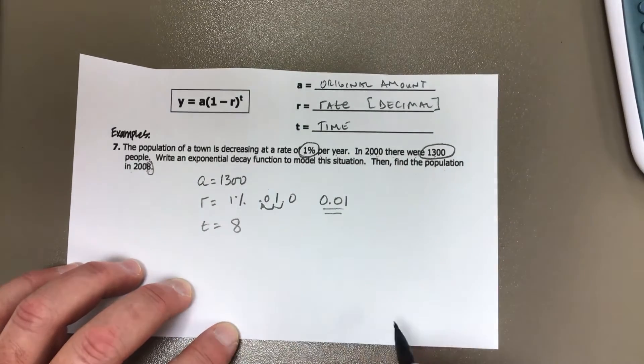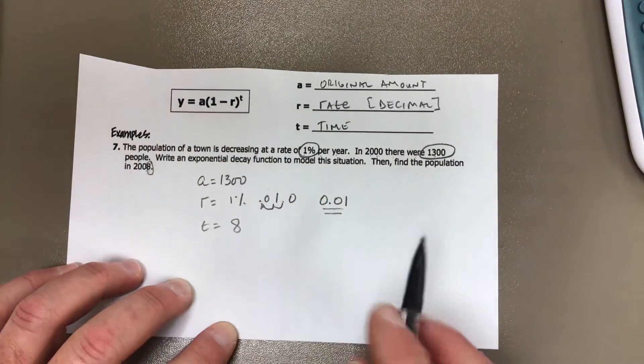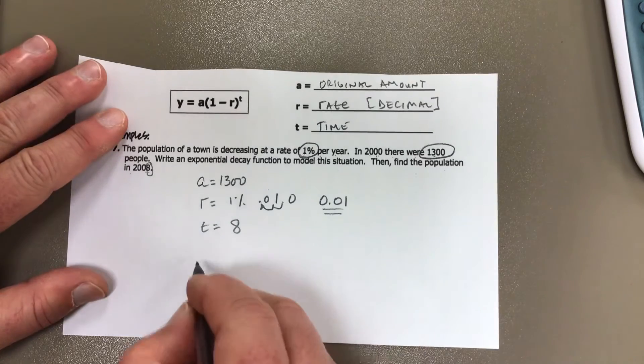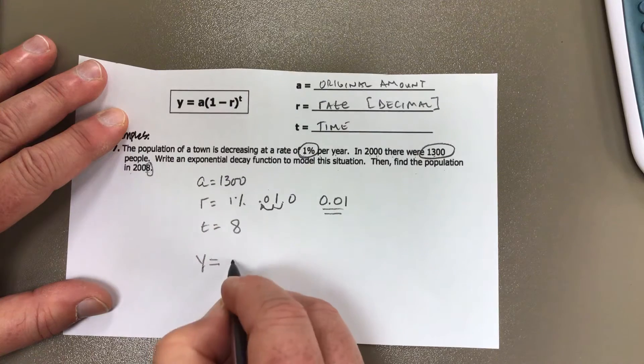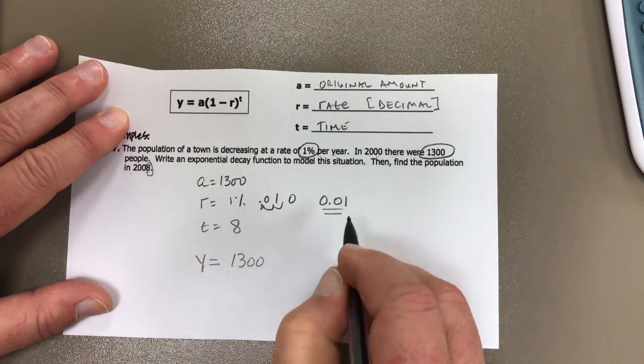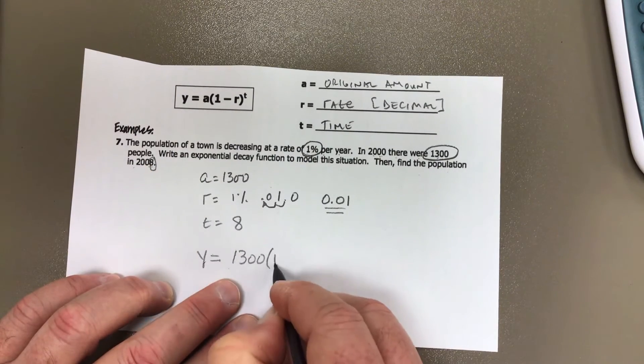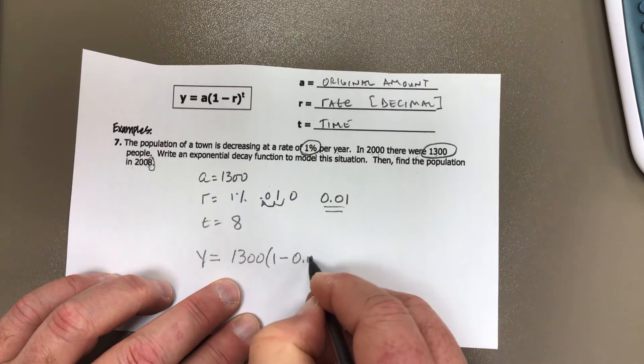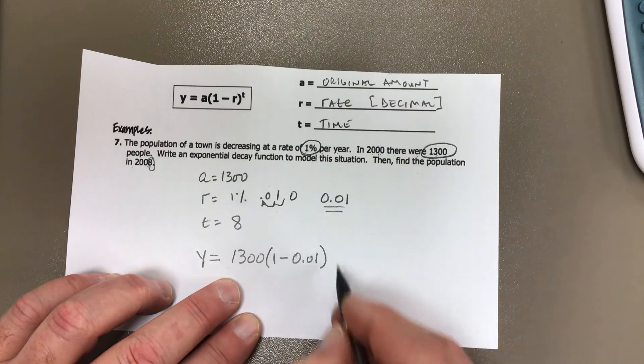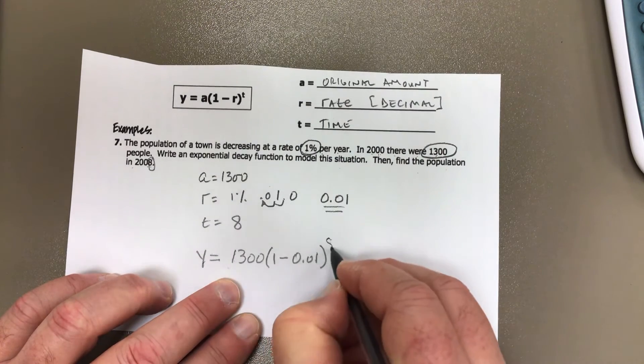So now we just fill in the information into the formula. So we would have y is equal to the a or the original amount, 1,300 parentheses, one minus this 1% or 0.01, and then raised to the t or eight power.